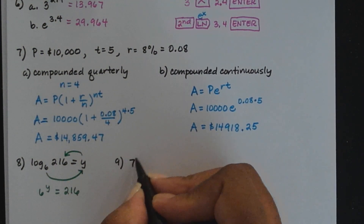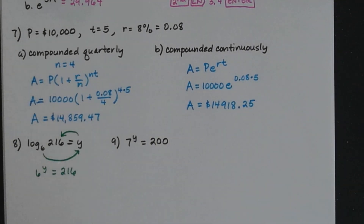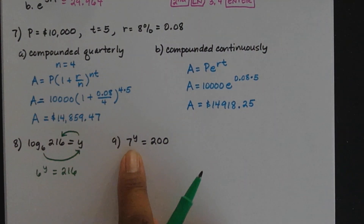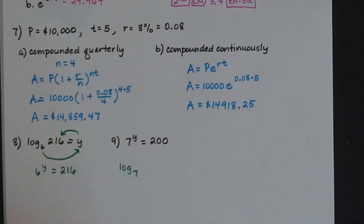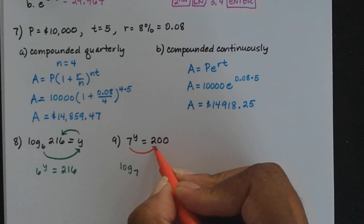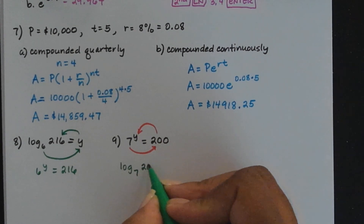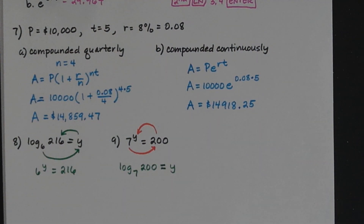Number 9: 7 to the y equals 200 — write that in its equivalent logarithmic form. In logarithmic form, the base 7 becomes the subscript of the logarithm, the exponent y becomes what the log equals, and 200 is what we're taking the log of. So log to the base 7 of 200 equals y. That's how we write it in equivalent logarithmic form.